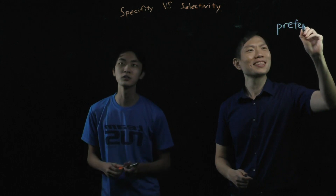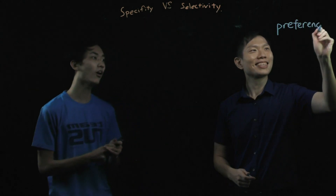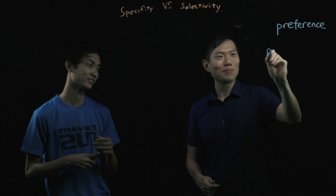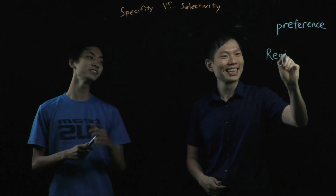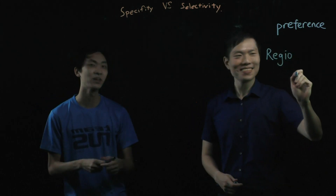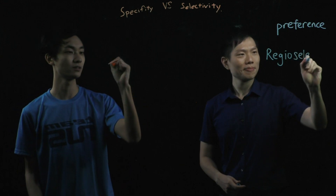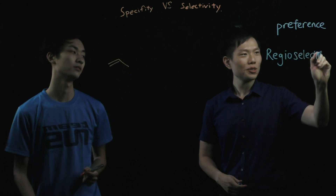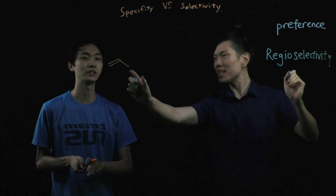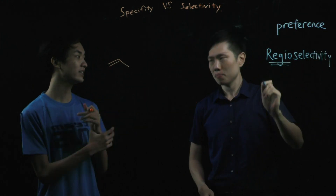What kind of choices? For example, let's talk about regioselectivity. That's a big term. 'Regio' means a region. For example, if we have an alkene like this — an asymmetrical alkene. We have propene, which is asymmetrical.